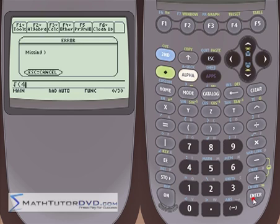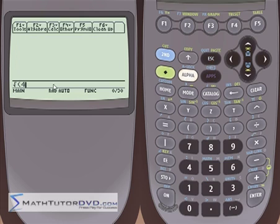If you forget to close the parentheses, the calculator will tell you that you're missing a parentheses. Go ahead and hit Escape to back out of that and just add your parentheses, and the square root of four is two, just like you might expect.